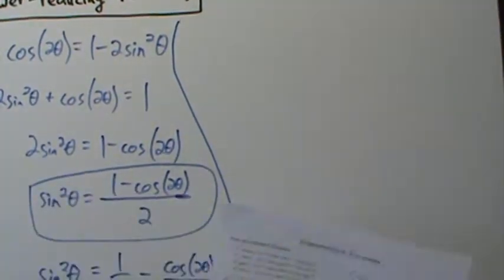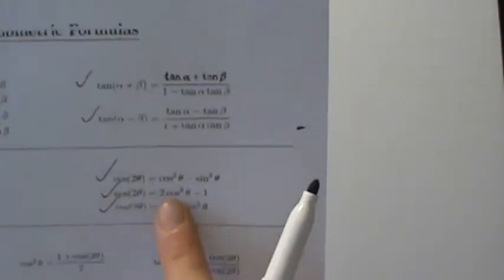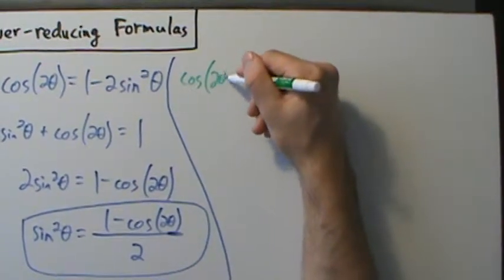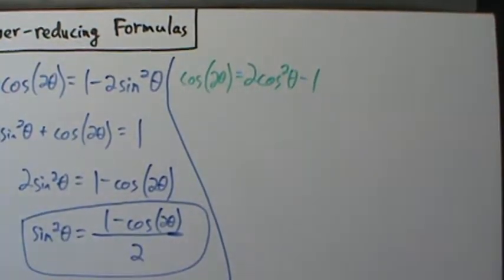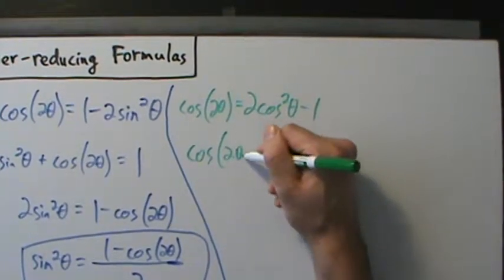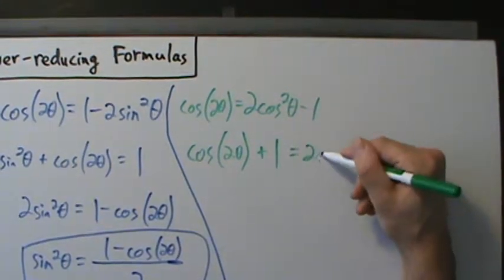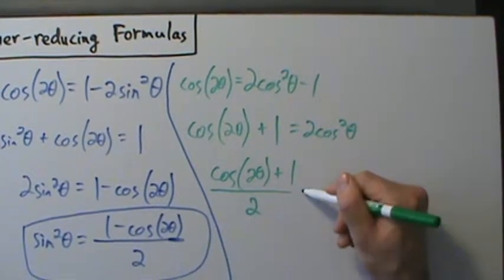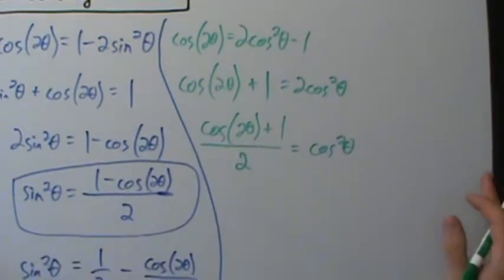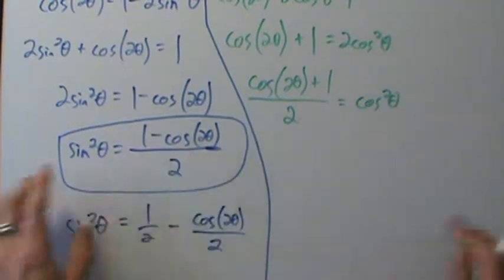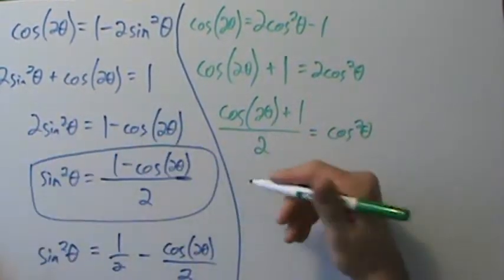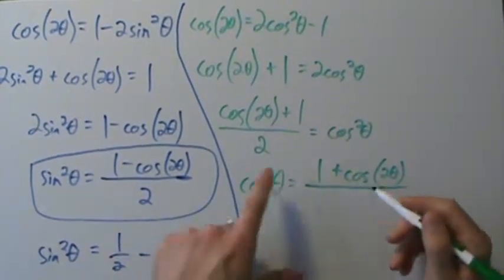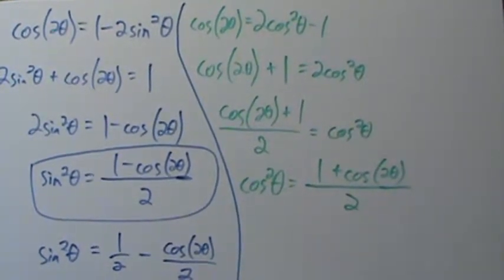Now for cosine squared — it's pretty much almost identical, just using a different formula. We'll use cosine of two theta equals two cosine squared of theta minus one. Add one to both sides: cosine of two theta plus one equals two cosine squared of theta. Divide everything by two: cosine squared of theta equals one plus cosine of two theta, all divided by two. It's more commonly written with the one first so it looks parallel to the sine squared formula.